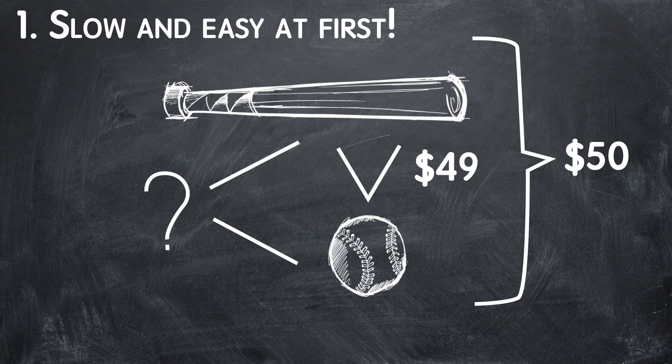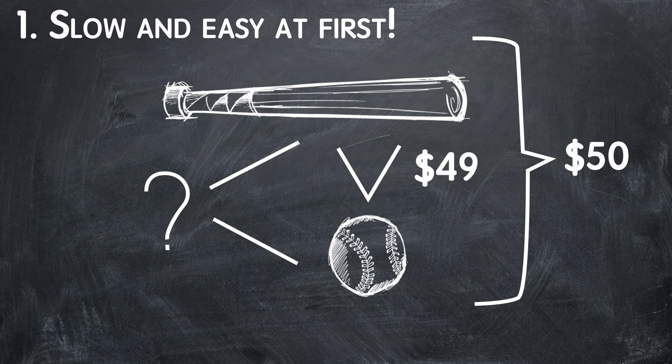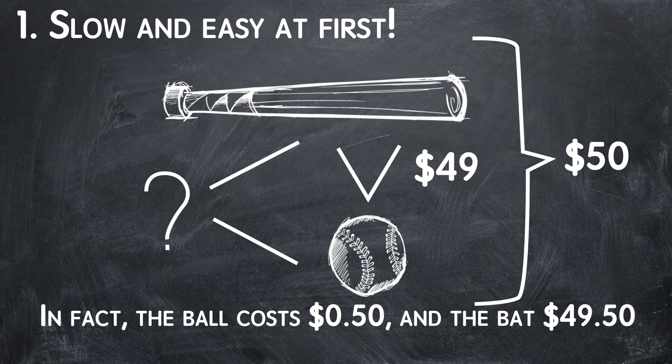However simple it seems to immediately say that the bat is $49 and the ball is $1, that's not the correct answer. In fact, the ball cost 50 cents and the bat $49.50. Have you got it right?